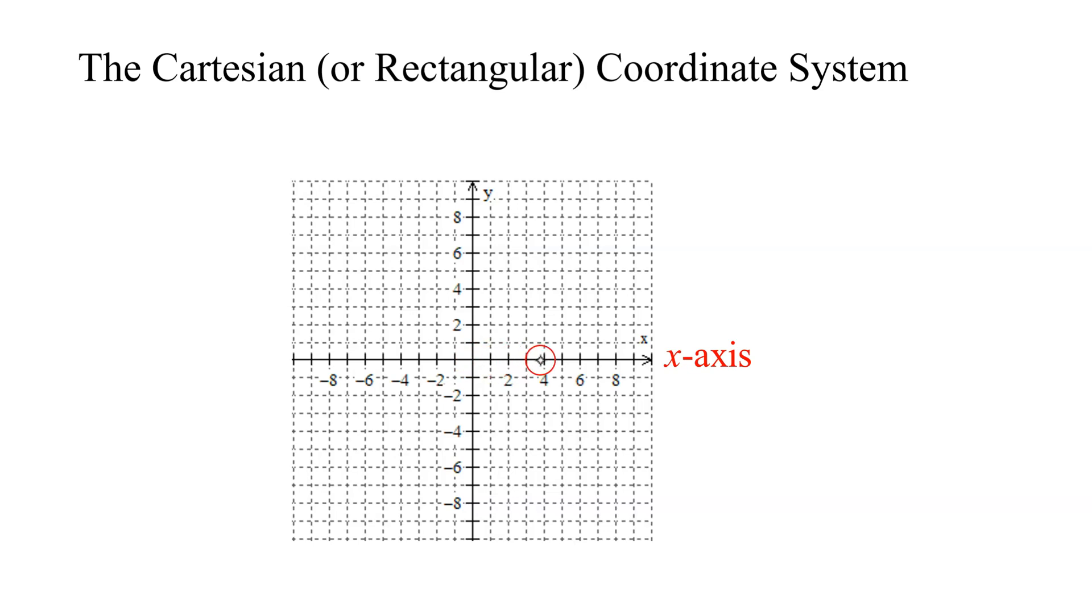And we've marked it off here in increments of 1, so I have 1, 2, 3, 4, 5, etc., but they're only labeled in every other increment for clarity's sake.